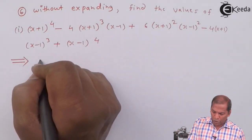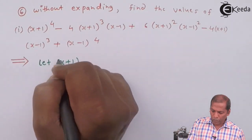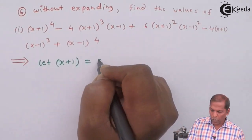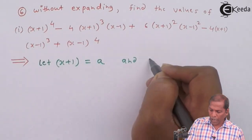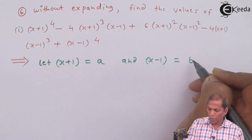So let us denote that x+1 is equal to a and x-1 is equal to b.